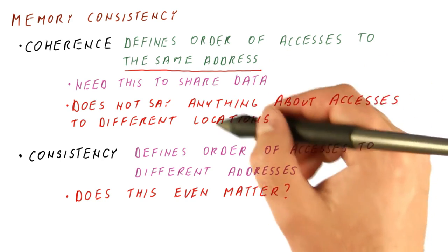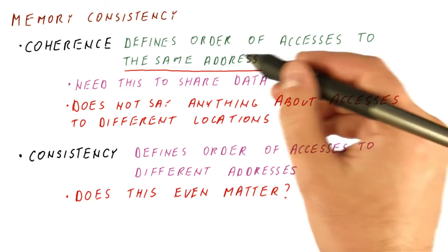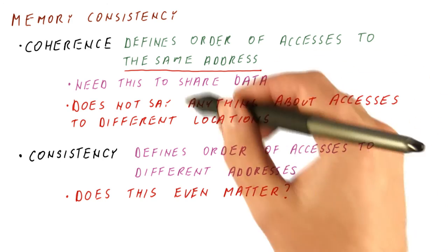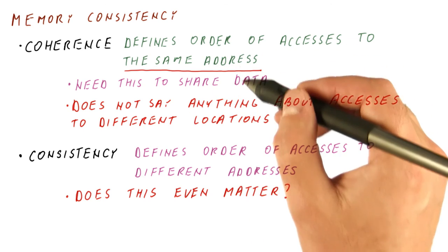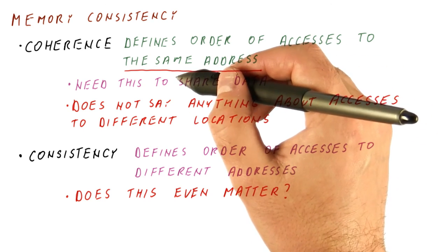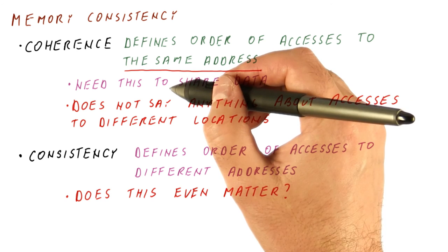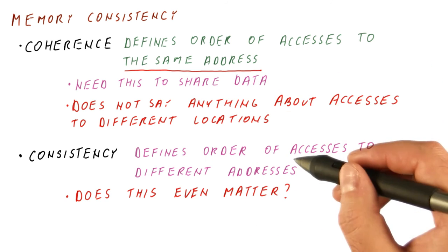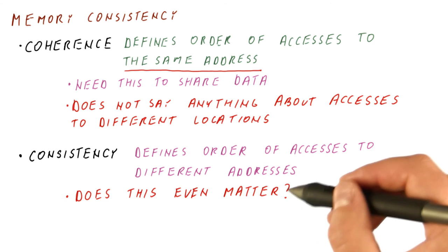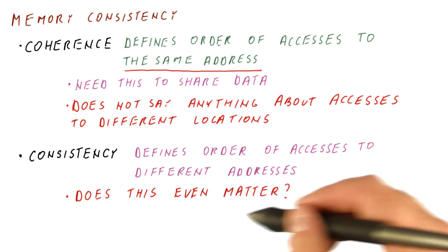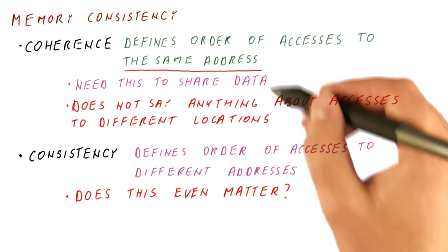If we guarantee that when I write to something, all the other cores get to see it, and that happens for every address, as in I write to A, somebody sees what I wrote, I write to B, somebody sees what I wrote, what can change about the order of accesses to different addresses, and how does that even matter if I need to maintain this?